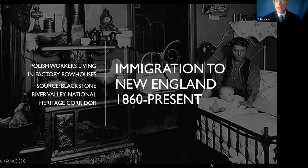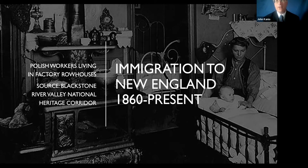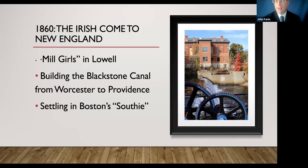I'm going to do a quick 20-minute overview and then we'll have a discussion. The initial slide is from the Blackstone River Valley National Heritage Corridor, a National Park Service site. It illustrates how workers lived starting in the 1860s — this is Polish workers living in factory row houses. The first group I'd like to talk about is the Irish, coming around the 1860s.